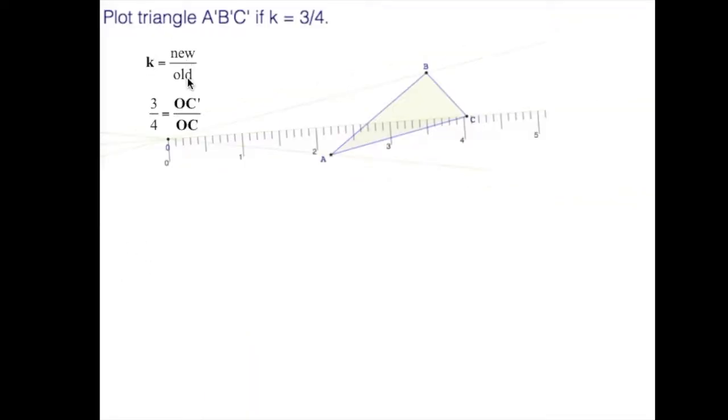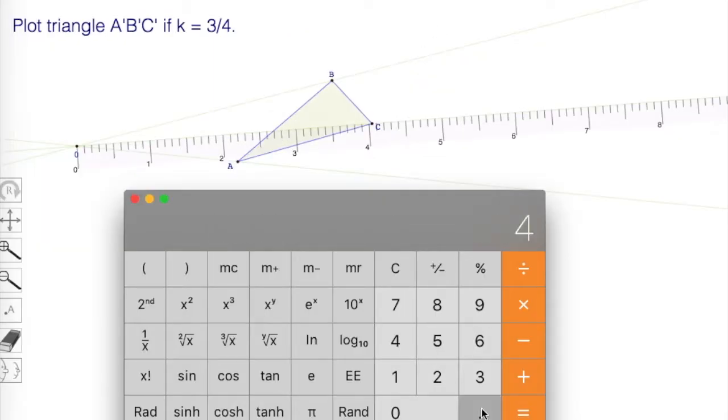So the ratio of similarity is new over old. It's 3 quarters is OC prime over the old, which is OC. We've measured OC as being 4.04. I'm going to cross multiply the 3 times 4.04, then divide by 4, and that will give us 3.03. I'm going to plot the OC prime at 3.03. 4.04 times 3 quarters, so times 3, divided by 4, is equal to 3.03.